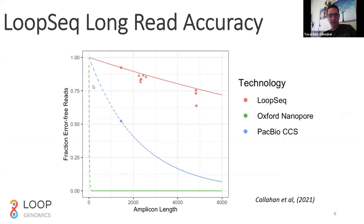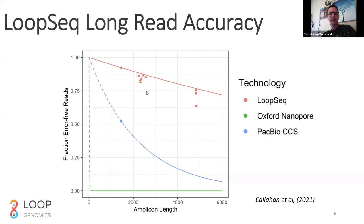How is this different from other long-read technologies? Primarily in two ways. One, you can actually use a short-read sequencer to do this. And maybe more importantly, the error rate is much lower. This is from a recent publication from Ben Callahan, where he examined the exact same amplicons with a known sequence and sequenced them using three different technologies: PacBio, Oxford Nanopore, and Loop Genomics. He calculated the fraction of error-free long reads — reads with zero errors — as a function of amplicon length. Loop is shown in red, PacBio in blue, and Oxford Nanopore in green. At 5 KB, 2.2 KB, and 1.5 KB, you can see the fraction of error-free molecules is much higher when using a technology with a lower error rate.